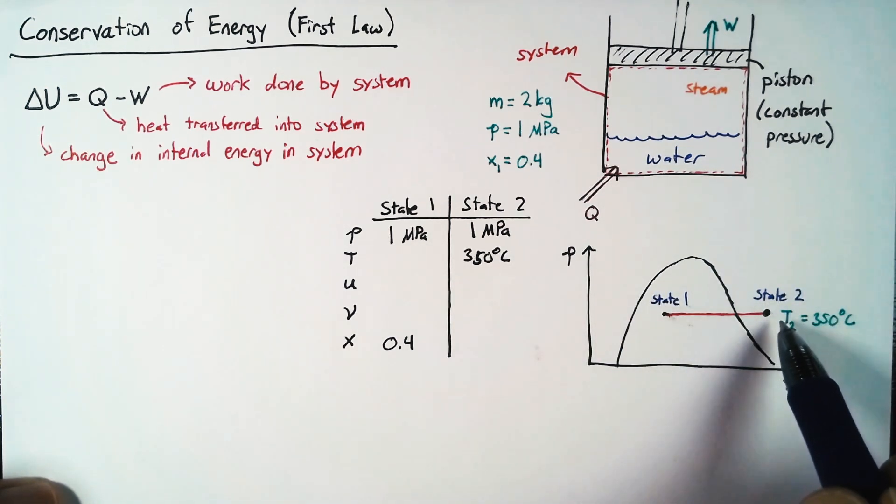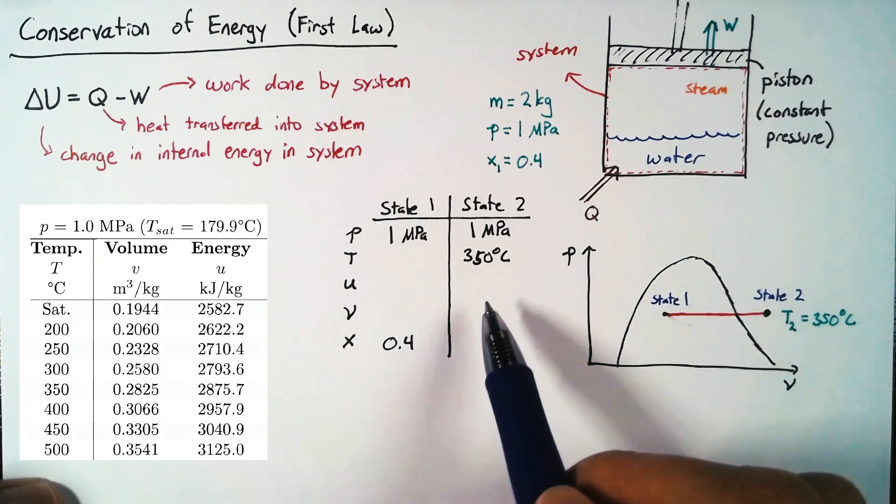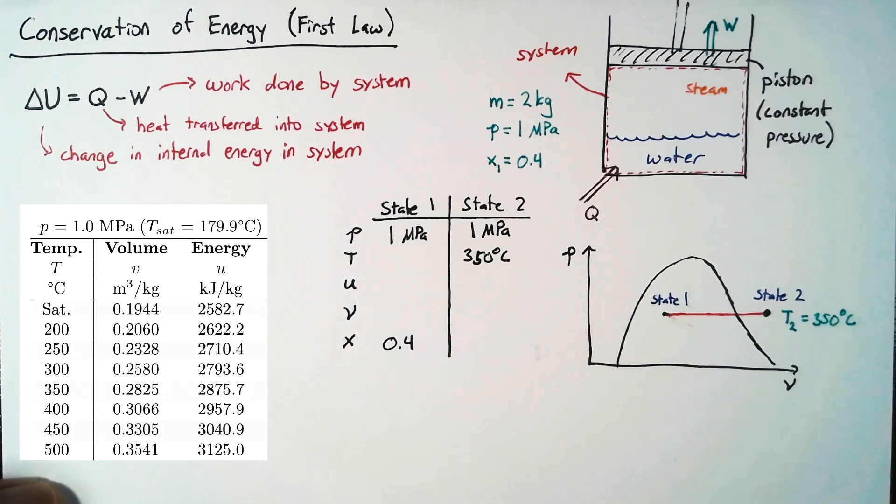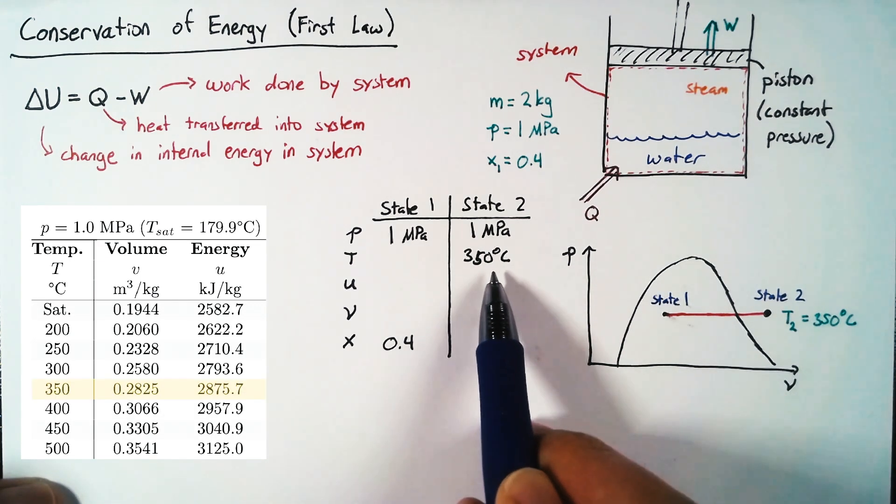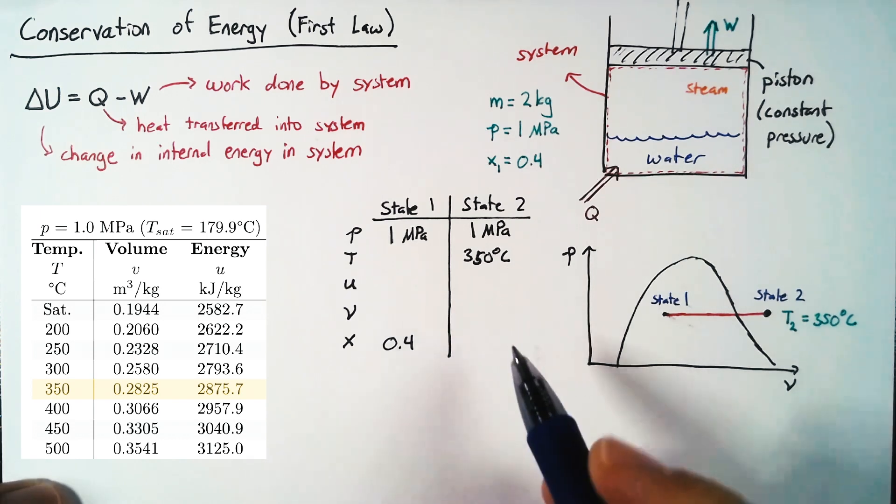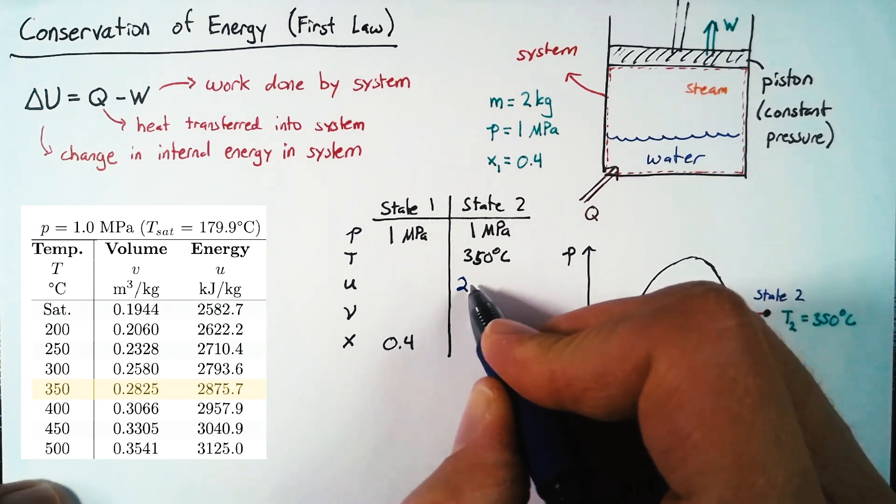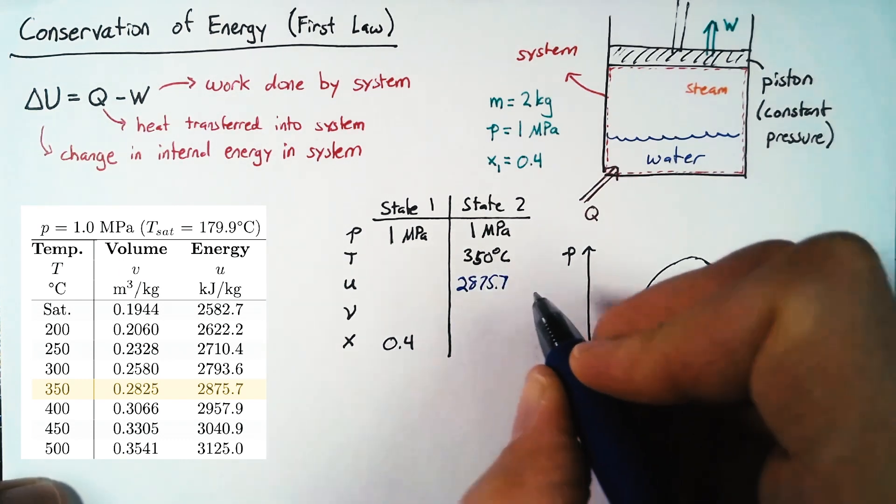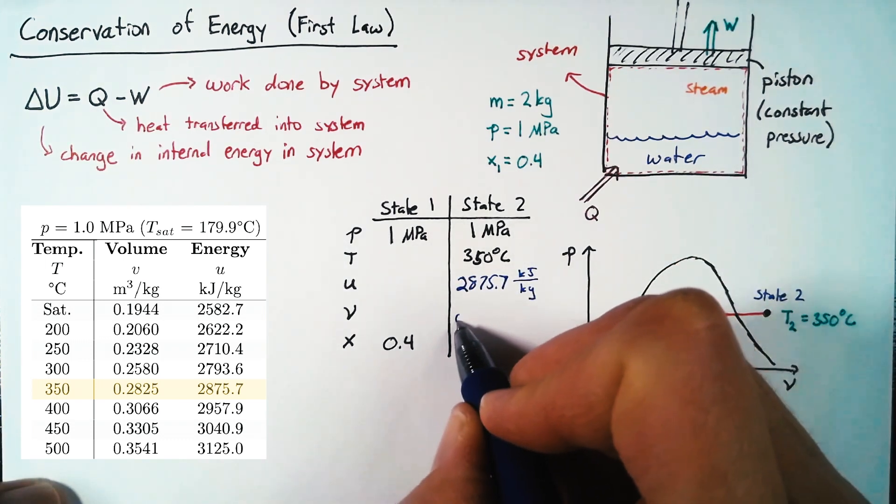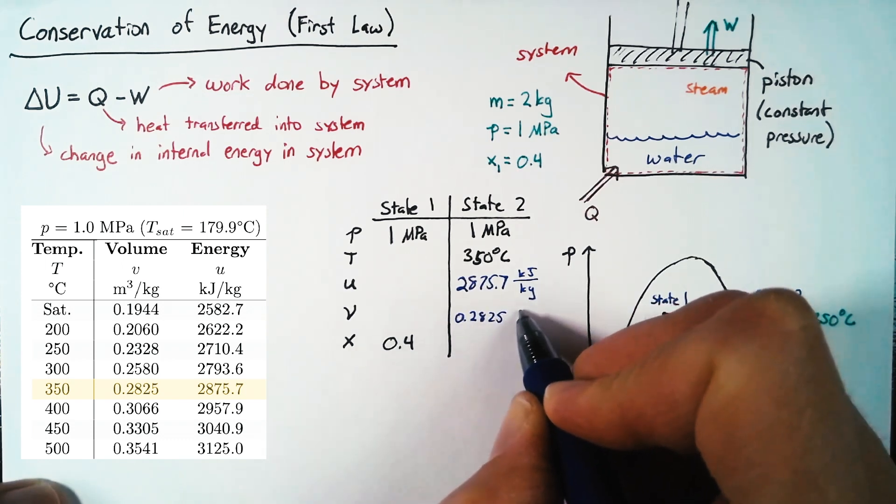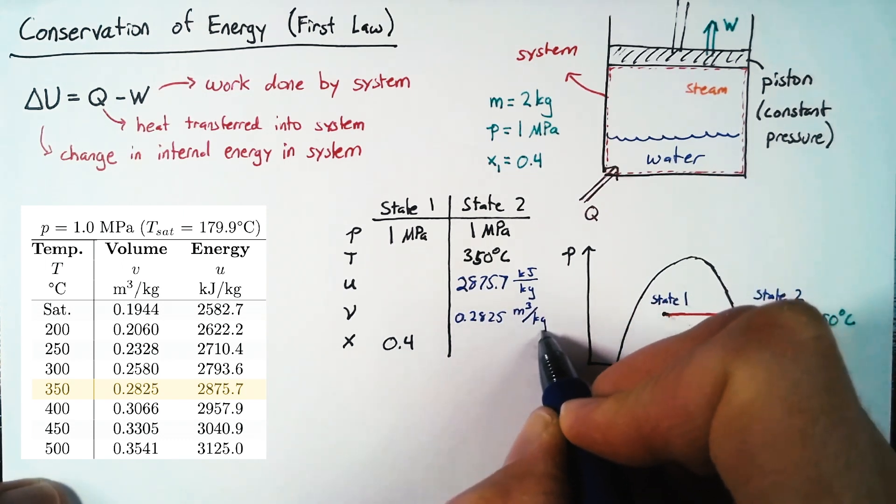We know from our PV diagram that we're going to be in the superheated region. And so we're going to go to the superheated tables in order to find this data. Specifically, we need to find the superheated tables where the pressure is equal to 1 megapascal. And from there, we'll read off directly where the temperature is 350 degrees Celsius. So grabbing those values, we find that U is 2875.7 and the units there are kilojoules per kilogram. And our specific volume is 0.2825 with units of meters cubed per kilogram.